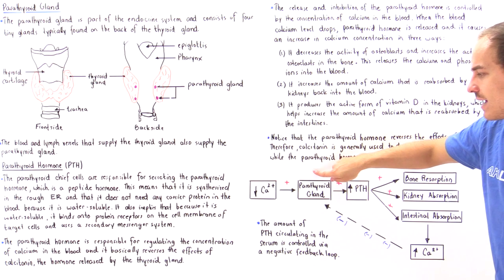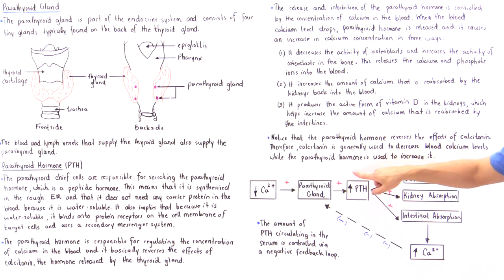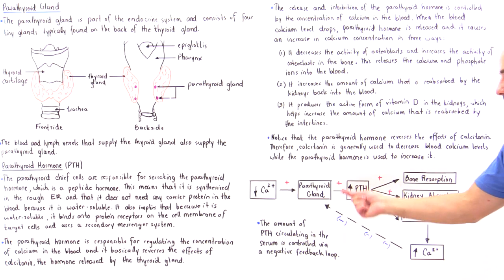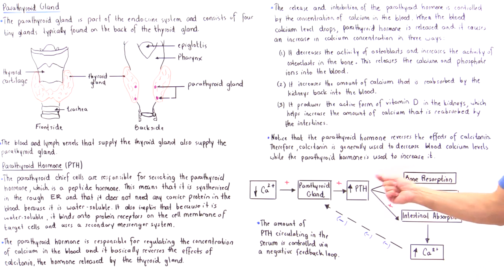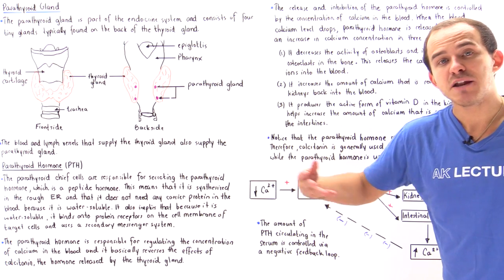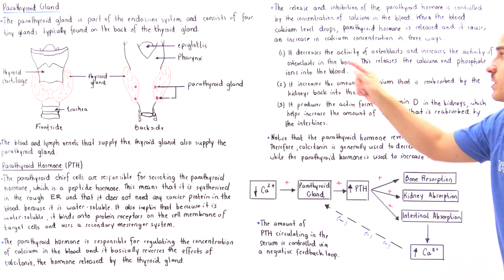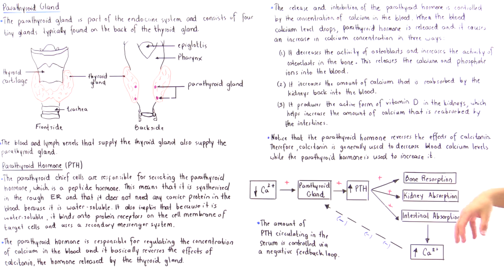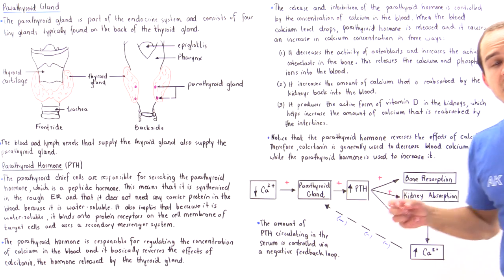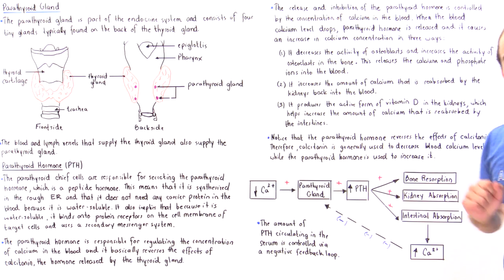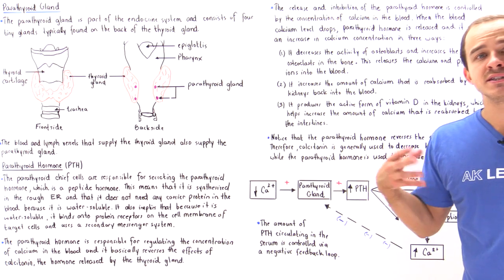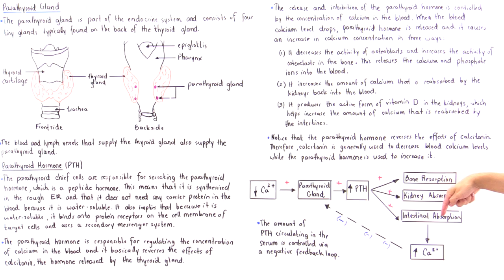There is a positive feedback loop here. When we increase the amount of parathyroid hormone (PTH) in our blood, that basically does three things: it increases bone resorption — so it increases the rate of osteoclasts and increases the rate of osteoblasts; it increases the absorption of our kidneys; and it increases the absorption of calcium in our intestines. Together, this basically increases the amount of calcium that is found inside our blood.